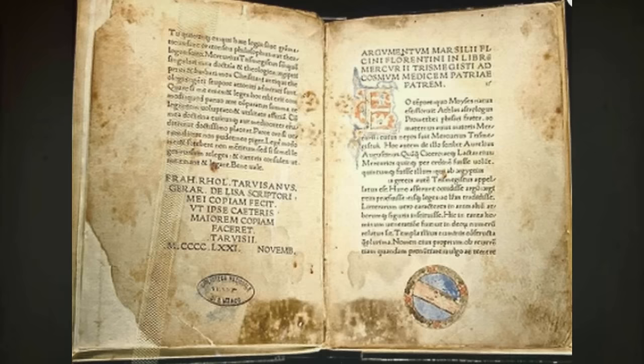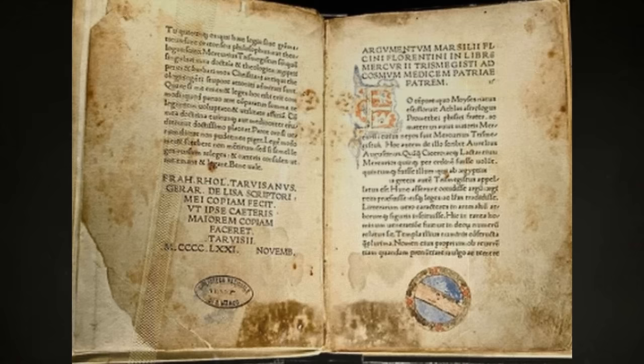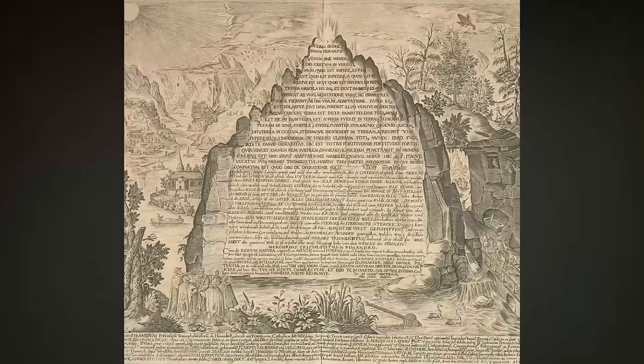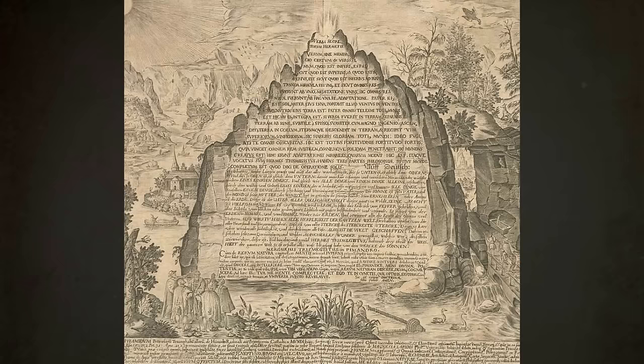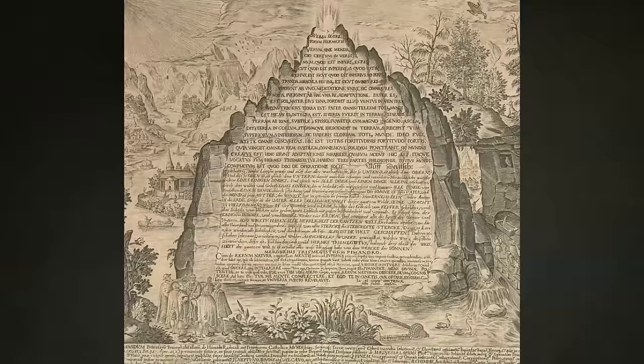Within the secret teachings of all ages, Hall delves into Hermeticism, an ancient spiritual and philosophical tradition. Hermetic principles, as derived from the Hermetic texts like the Emerald Tablet, are pivotal in understanding the workings of the universe, the interconnectivity of all things, and how to apply these universal truths for success and abundance in all areas of life.